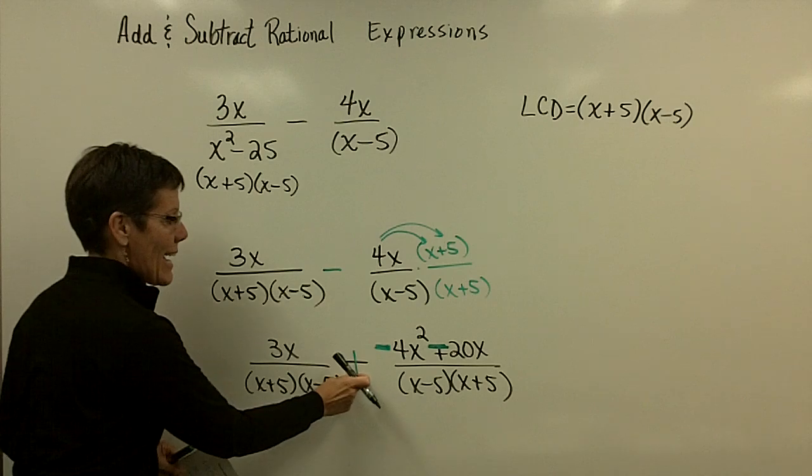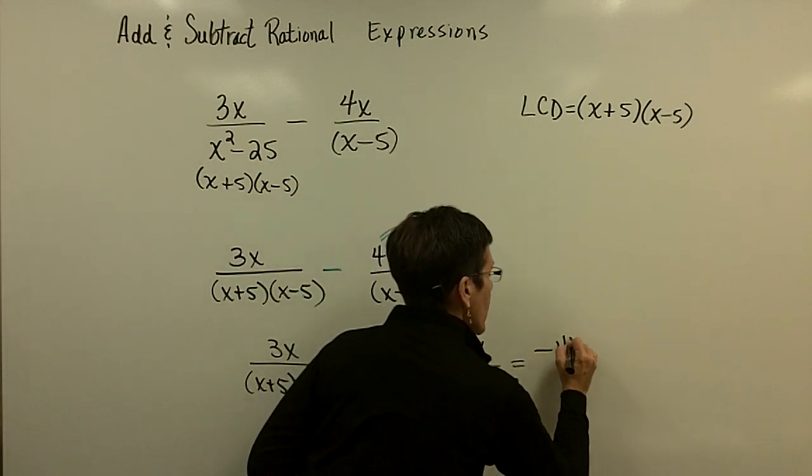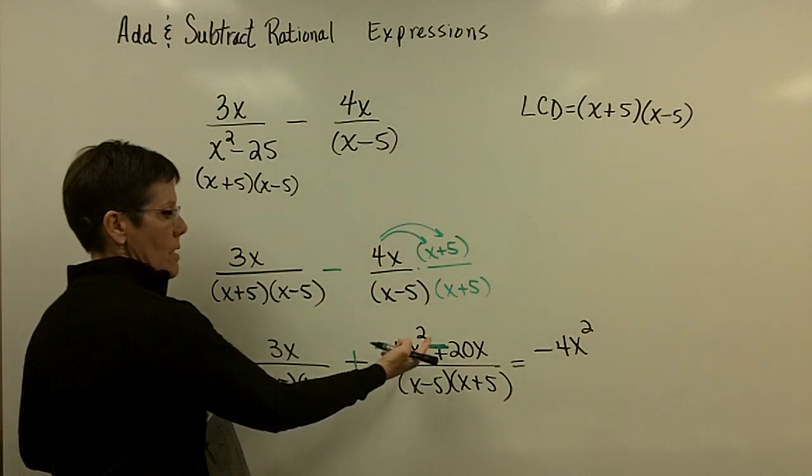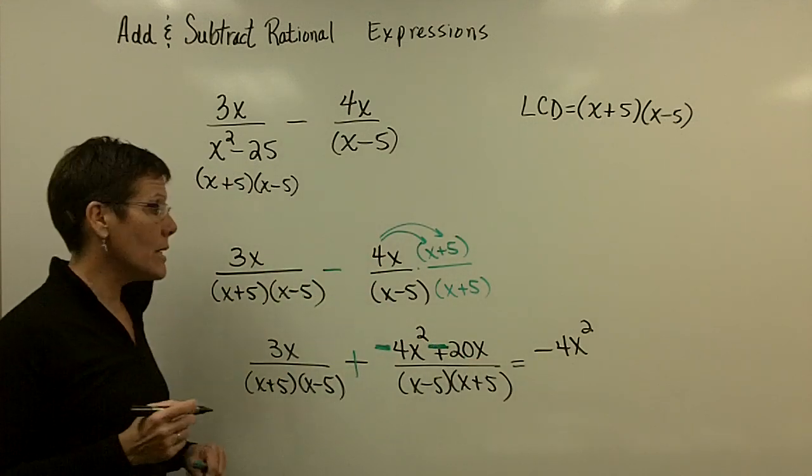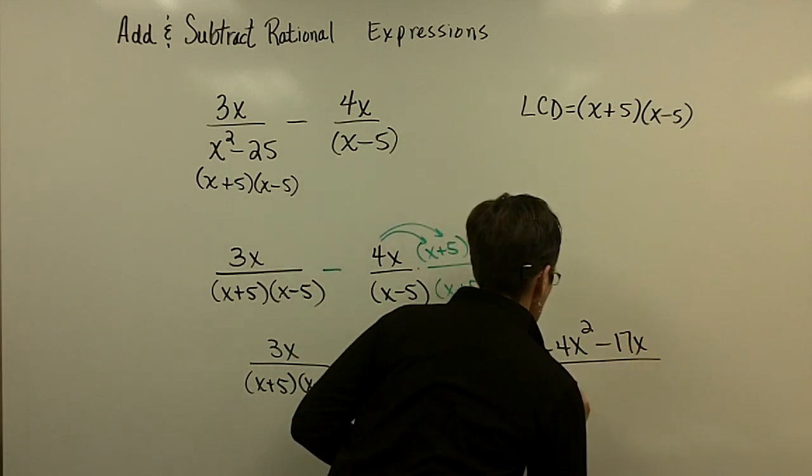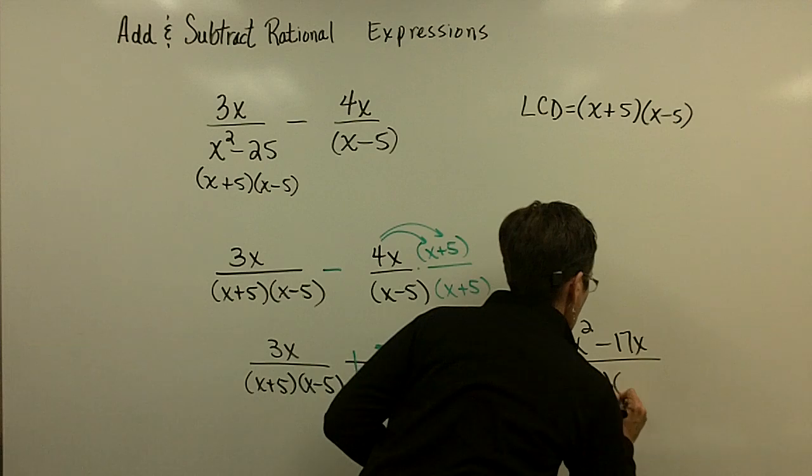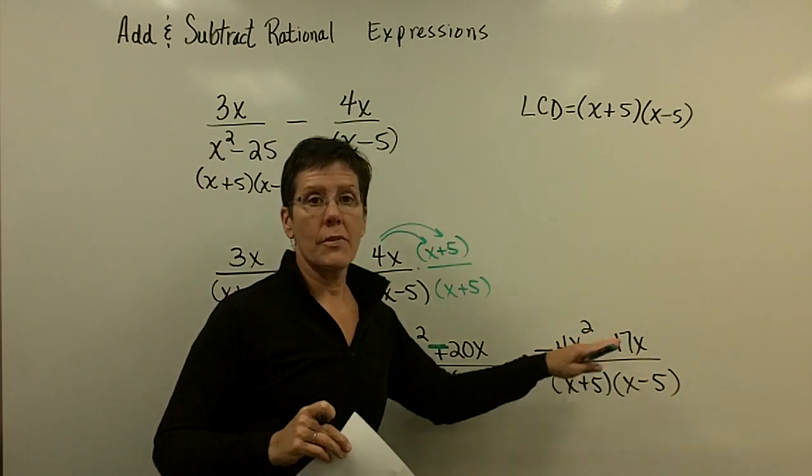So now I'm going to make that negative and I'm going to make that negative, and now I'm going to add the like terms. As an x squared term goes, I have just a minus 4x squared. This minus 20x and a positive 3x collect to be a minus 17x, and they have that common denominator of x plus 5 and x minus 5.